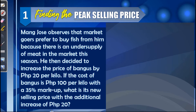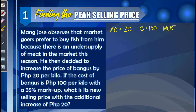To solve this problem, let us take note of the given values. The increase of 20 pesos per kilo gives us the mark on. Next, we have the cost of bangus per kilo which is 100 pesos, and the markup rate which is 35% or in decimal 0.35.